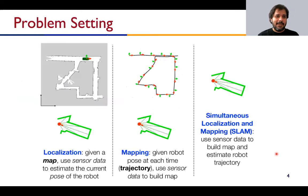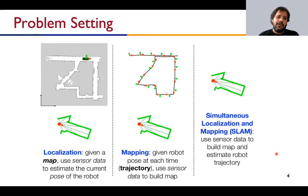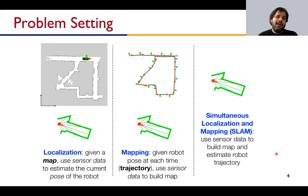SLAM can be broken down into its two main components: localization and mapping. Localization is the problem where, given a map of the environment, we want to figure out where the robot or F110 car is in that environment — very important for a race car to know if it's in a straight or near a turn. The mapping problem is the complementary problem: if you know how you are moving, can you accumulate that information to build a map of your surroundings?